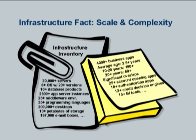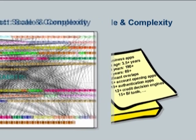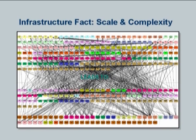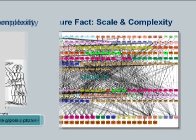If you start drawing even a simple diagram of who is talking to whom and who is dependent on whom, you get something like this. This is actually a simplified version of the IT environment operated by a top-tier bank in Europe — AB and AMRO. The first one was Bank of America. As you can see, you have a mess.